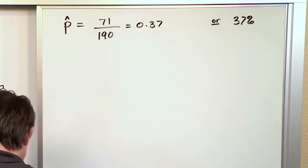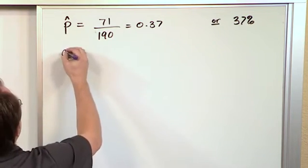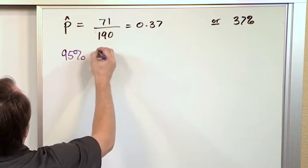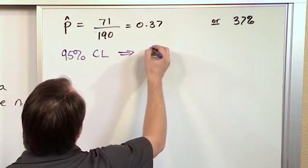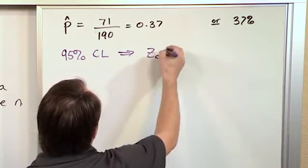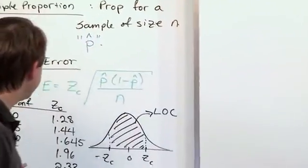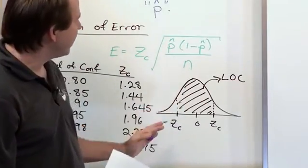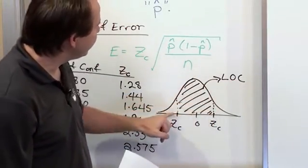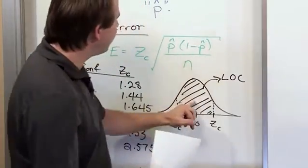At a 95% confidence level, what is the critical value of Z? We need that to calculate the margin of error. To remind you, 95% means that the area between these two values of Z, symmetrical, is 0.95.